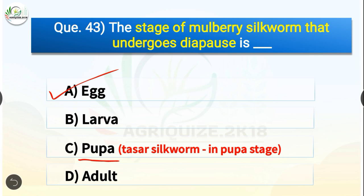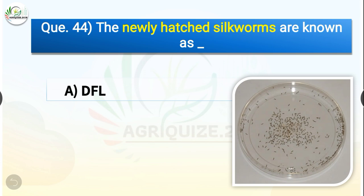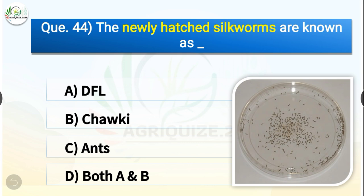Question number forty-four: The newly hatched silkworms are known as dash. The options are DFL, chalky, ants, or both A and B. The correct answer is option D — both A and B. The newly hatched silkworms are known as DFL and chalky both.